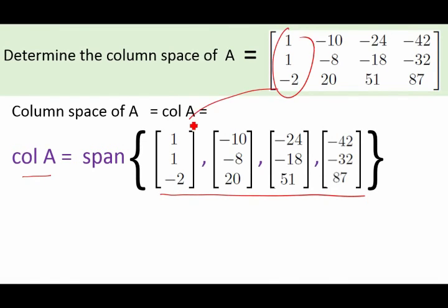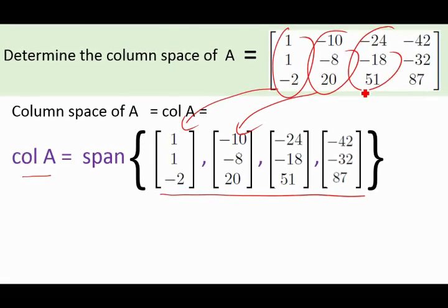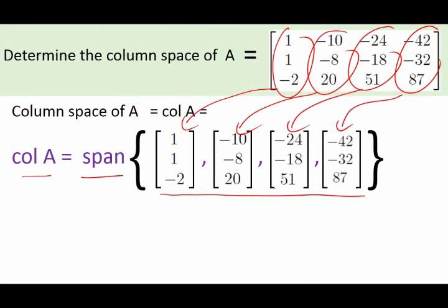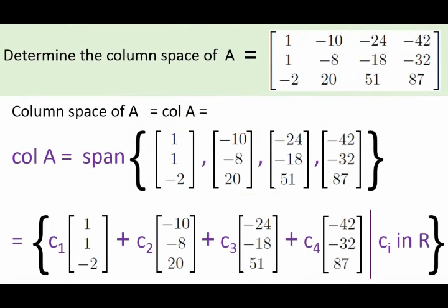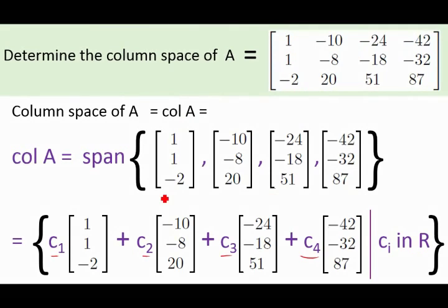So I take all my columns and then take the span of those columns, which by definition is the set of all linear combinations. So it's a set of all linear combinations of our vectors.